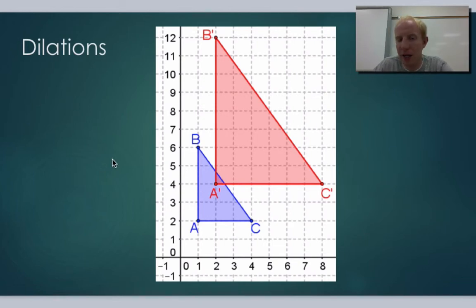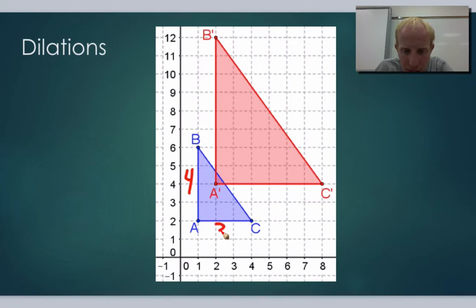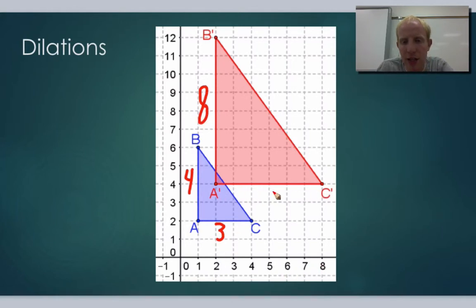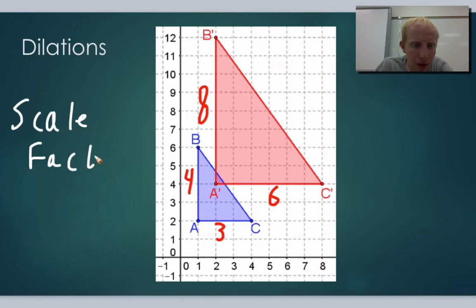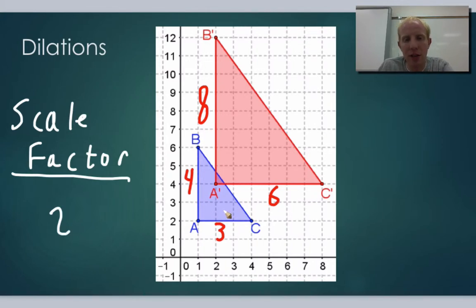We can tell that these triangles are a dilation of each other by figuring out how long each side length is. For example, in triangle ABC, A to B has a side length of 4, and the other side goes from 1 to 4, a length of 3. Comparing to triangle A'B'C', A prime to B prime goes from 4 to 12, so that's a side length of 8, and A prime to C prime goes from 2 to 8, a length of 6. Notice this side grew by twice as much, and this side grew by twice as much. When all the sides grow by the same amount, that's a dilation, and the amount they're growing by is what we call the scale factor.